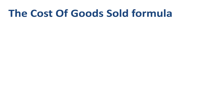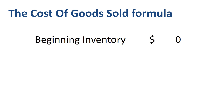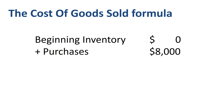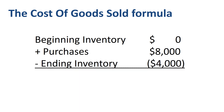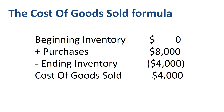Another way to look at the same numbers is to use the Cost of Goods Sold formula. Beginning inventory — in this case zero — plus purchases of $8000, minus ending inventory of $4000, equals cost of goods sold of $4000. Important variables here are the value of the beginning inventory and the ending inventory.